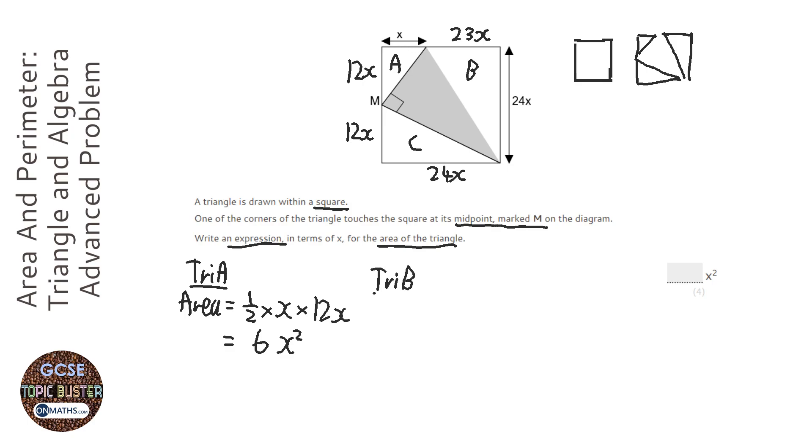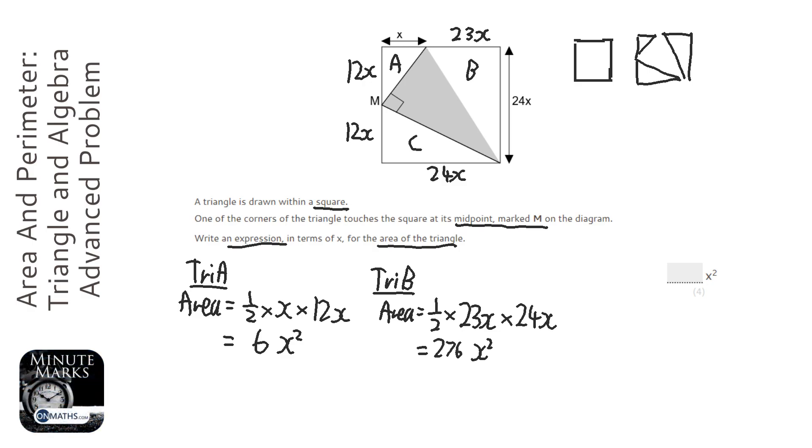Triangle B, the area is going to be half times the base, which is 23x, times the height, which is 24x. So we know it's going to be x squared again, so the two x's, but I just need to do 23 times 24 times a half, or I can half 24 to make 12, and then times by 23, which is going to be 276x squared.